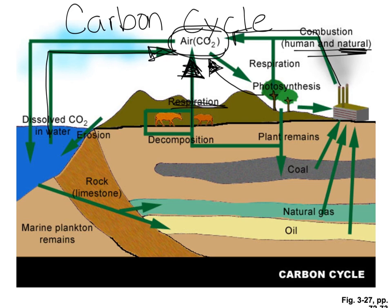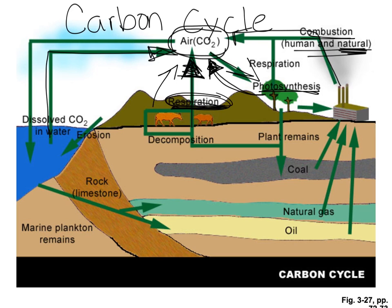In your notes, fill in what respiration, photosynthesis, and combustion are. Respiration releases CO2 into the atmosphere. Photosynthesis takes CO2 out of the atmosphere — plants do add CO2 when doing respiration, but photosynthesis removes it. Combustion releases CO2 into the atmosphere. You don't have to memorize the whole diagram, but you should be able to read it and understand what it is explaining.